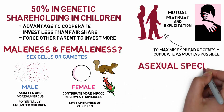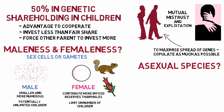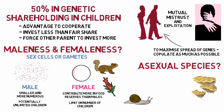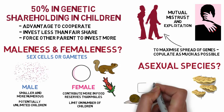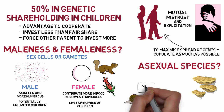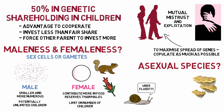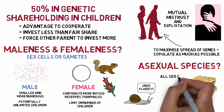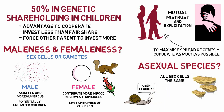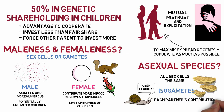This is not true for asexual species, for example fungi and snails, where individuals are not distinguishable into two sexes, so anybody can mate with anybody else. There is no sperm and egg, and all the sex cells are the same, called isogametes, therefore each partner's contribution is the same.